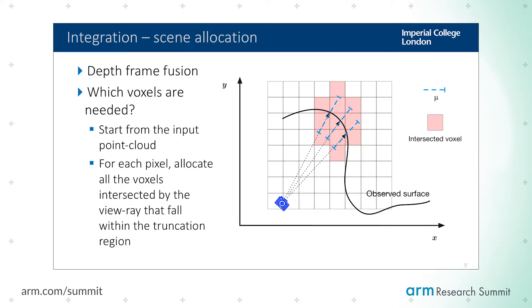First we have to infer which voxel blocks need to be allocated. We do this by ray casting the scene from the current depth image and retrieving all the intersected voxel blocks along the truncation region. In this way we collect everything that needs to be allocated on the map. We need to do this allocation in parallel and as fast as possible, because it needs to fit within the 30 millisecond budget.